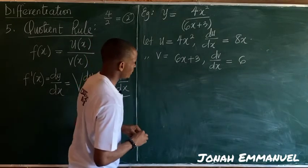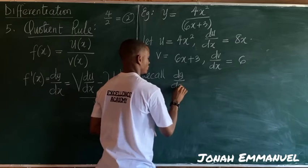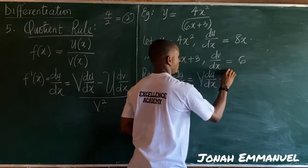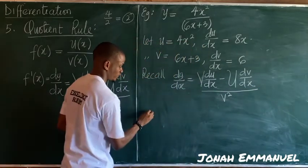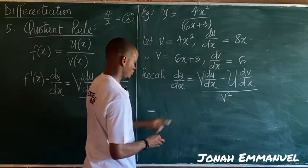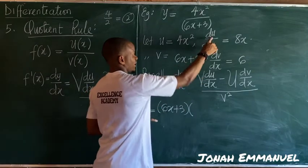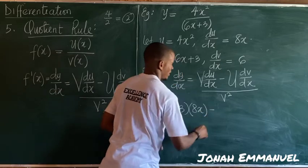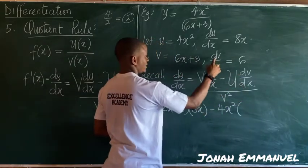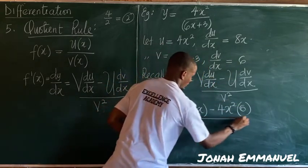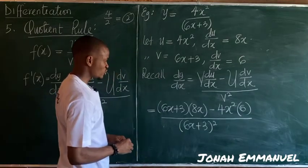Now I'll apply the quotient rule formula: dy/dx = (v · du/dx − u · dv/dx) all over v squared. Substituting values: v = (6x + 3), du/dx = 8x, u = 4x², dv/dx = 6. So this becomes (6x + 3)(8x) minus (4x²)(6), all over (6x + 3) squared.